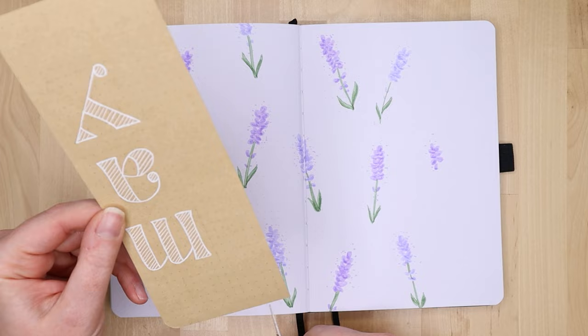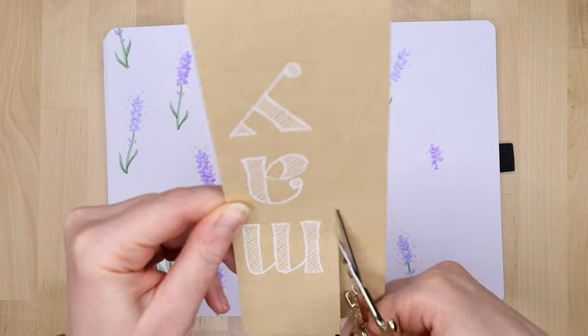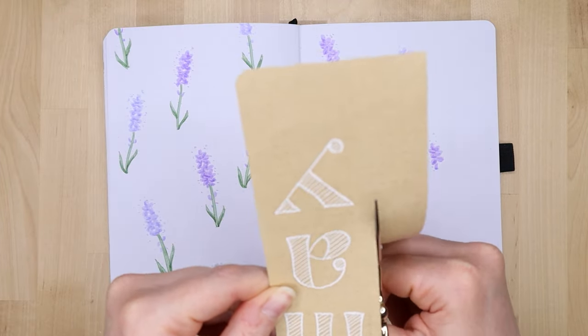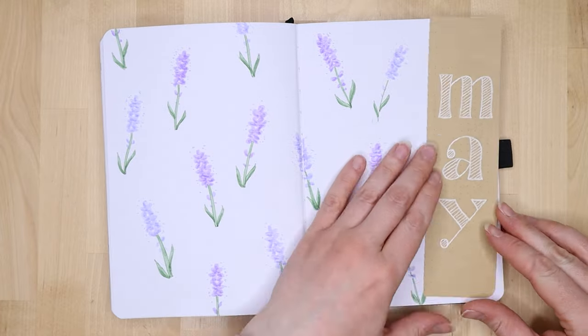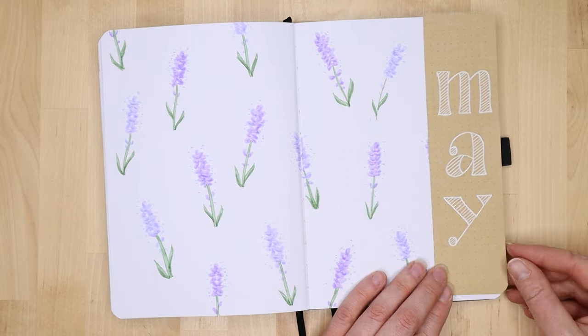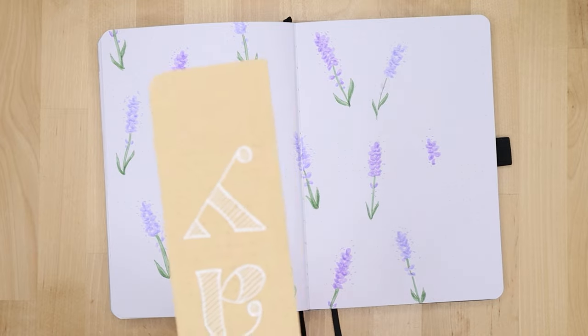I decided to do some straight lines to create shading in the actual letters which I felt made the letters pop a little bit more. So I'm just cutting down the craft paper to size to then stick that on the side.